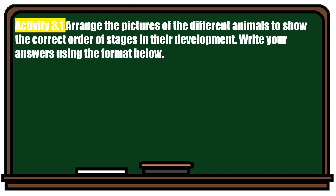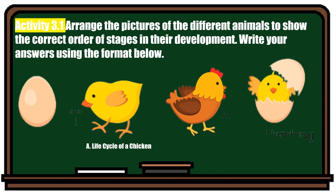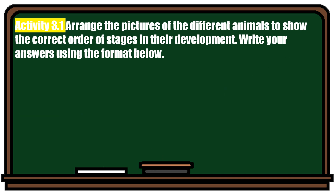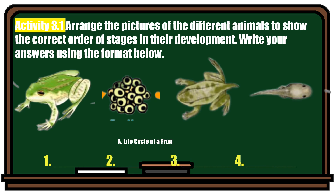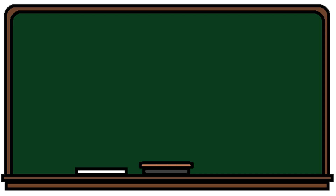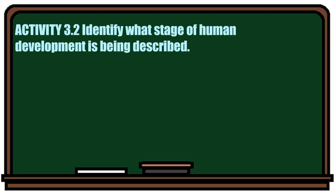Now class, let's have an activity. Arrange the pictures of the different animals to show the correct order of stages in their development. Write your answer using the format below. Another activity is Activity 3.2: identify what stage of human development is being described.